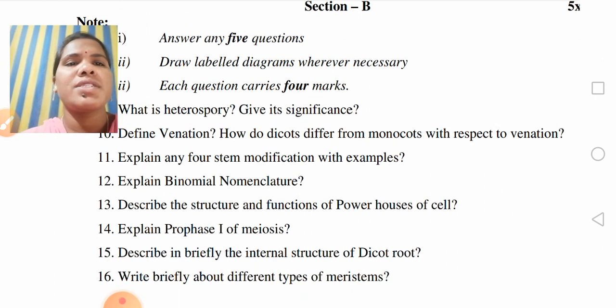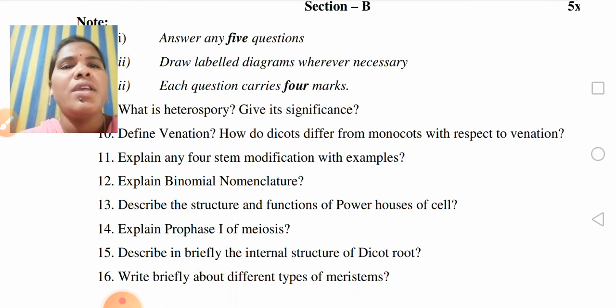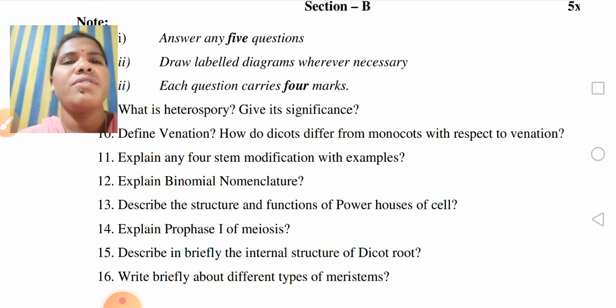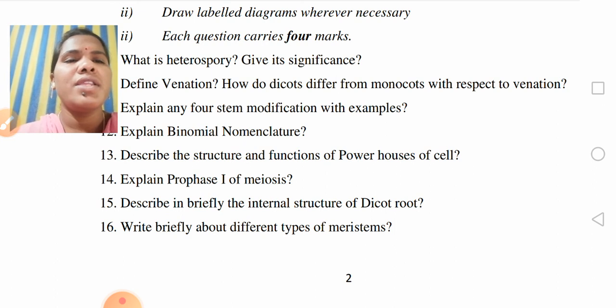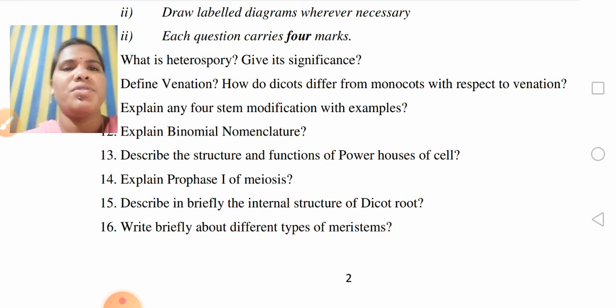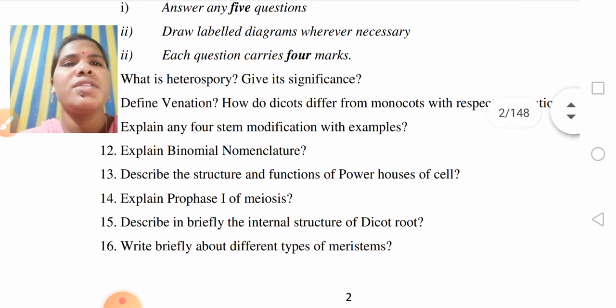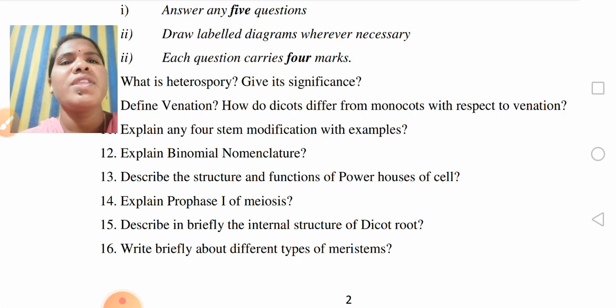Describe the structure and functions of the powerhouses of the cell. Explain prophase 1 of meiosis. Next, describe in briefly the internal structure of dicot root. Write briefly about the different types of meristems.